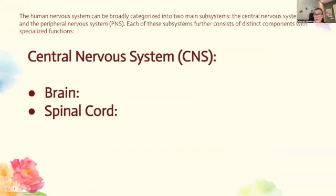First, we're going to talk about the central nervous system, or the CNS. The CNS includes the brain and the spinal cord. The brain is our command center — it processes sensory information, controls movement, regulates physiological functions, and is responsible for higher cognitive functions like thinking, memory, and emotion.